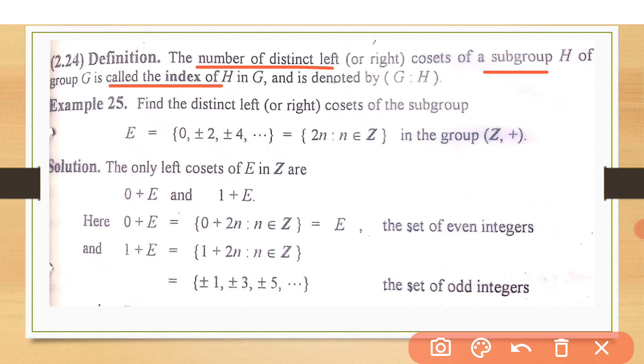We call this the index of subgroups in group G, and it is denoted by G ratio H. It means the index of H in G. We read it as index of H in G.